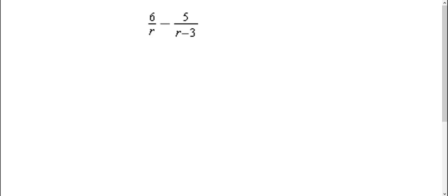Okay, we have 6 over r minus 5 over r minus 3. So what we need to do is find a common denominator.